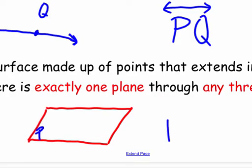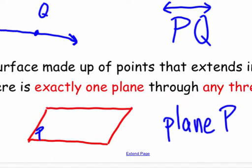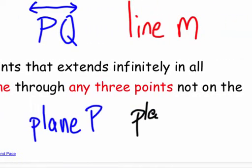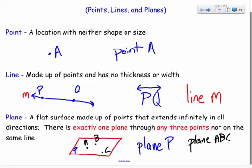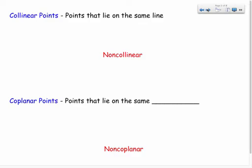When we draw planes in math, they look like a little parallelogram. There are a couple of ways to name a plane. You'll often see a letter in the corner — I could call this plane P. You might also name it with points: if I have points A, B, and C all in the same plane, I'd call it plane ABC, using any three non-collinear points.